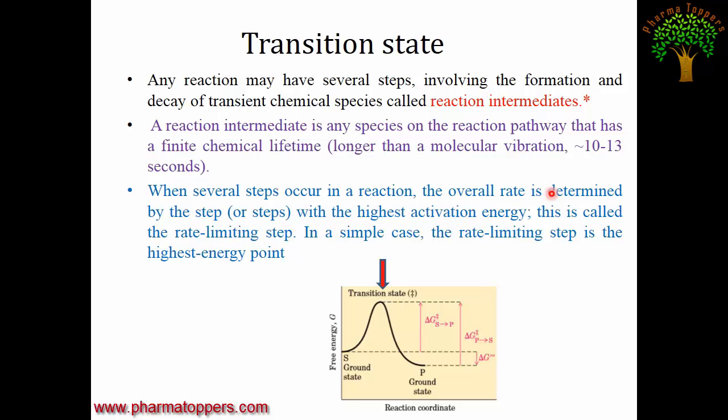This step with the highest activation energy is called the rate-limiting step. For example, if converting a substrate to product involves five intermediates, and the third, fourth, and fifth intermediates have the highest activation energy, then those steps are called the rate-limiting steps for the reaction.